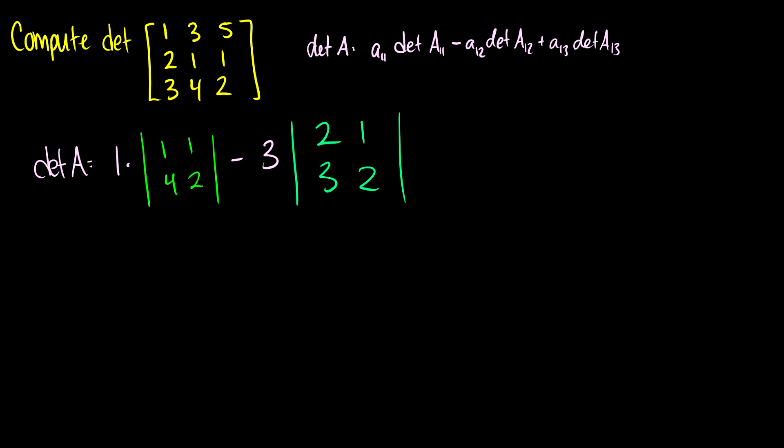And finally, we have to add A13, which is 5 times the determinant of capital A13. So that's going to take out the first row and the third column. So we're left with [2, 1; 3, 4]. So at this point, we're down to the two by two case. So we know how to take the determinant of that.